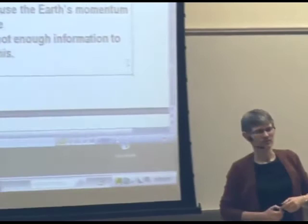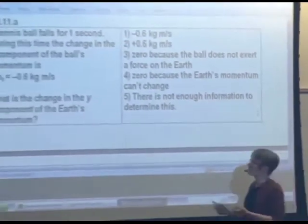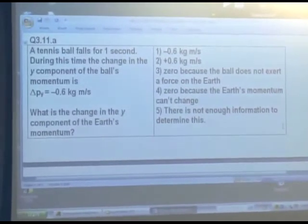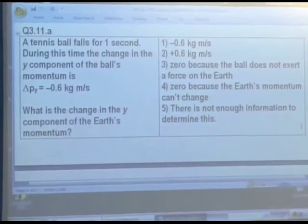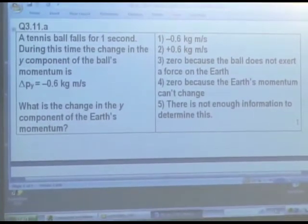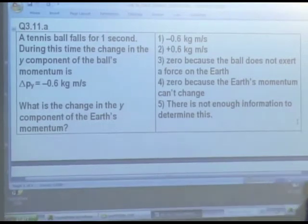And that turns out to be a fairly fundamental way of thinking about momentum transfer. So, let's see if we can think about it for a different system. Now, here we drop a tennis ball. And we start observing it at some time. We observe it for a second. And during this time, the tennis ball is going in the minus y direction, speeding up. So, the delta p sub y is minus 0.6 kilogram meters per second. Now, presumably, the object in the surroundings that it's interacting with most strongly is the earth.